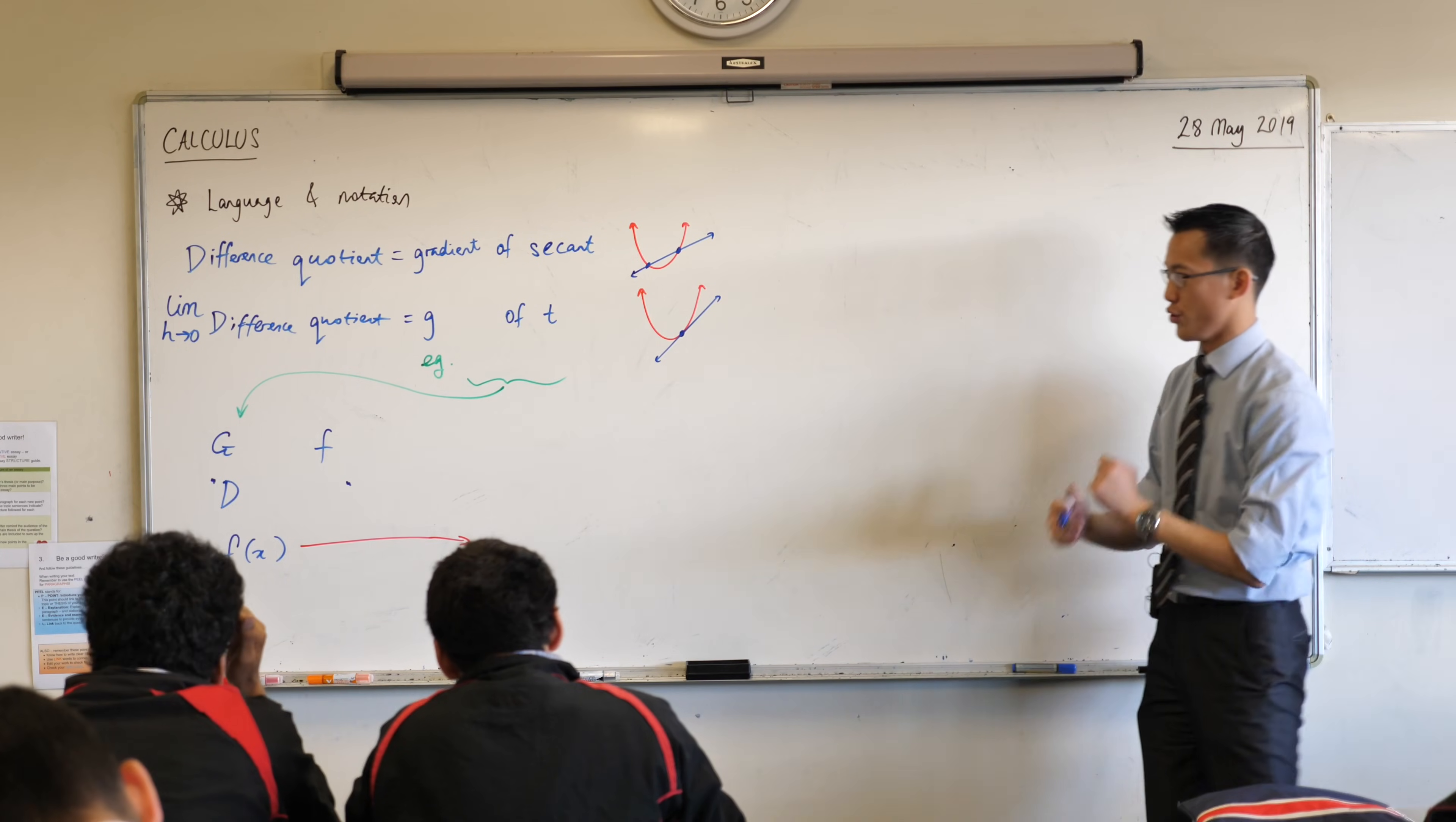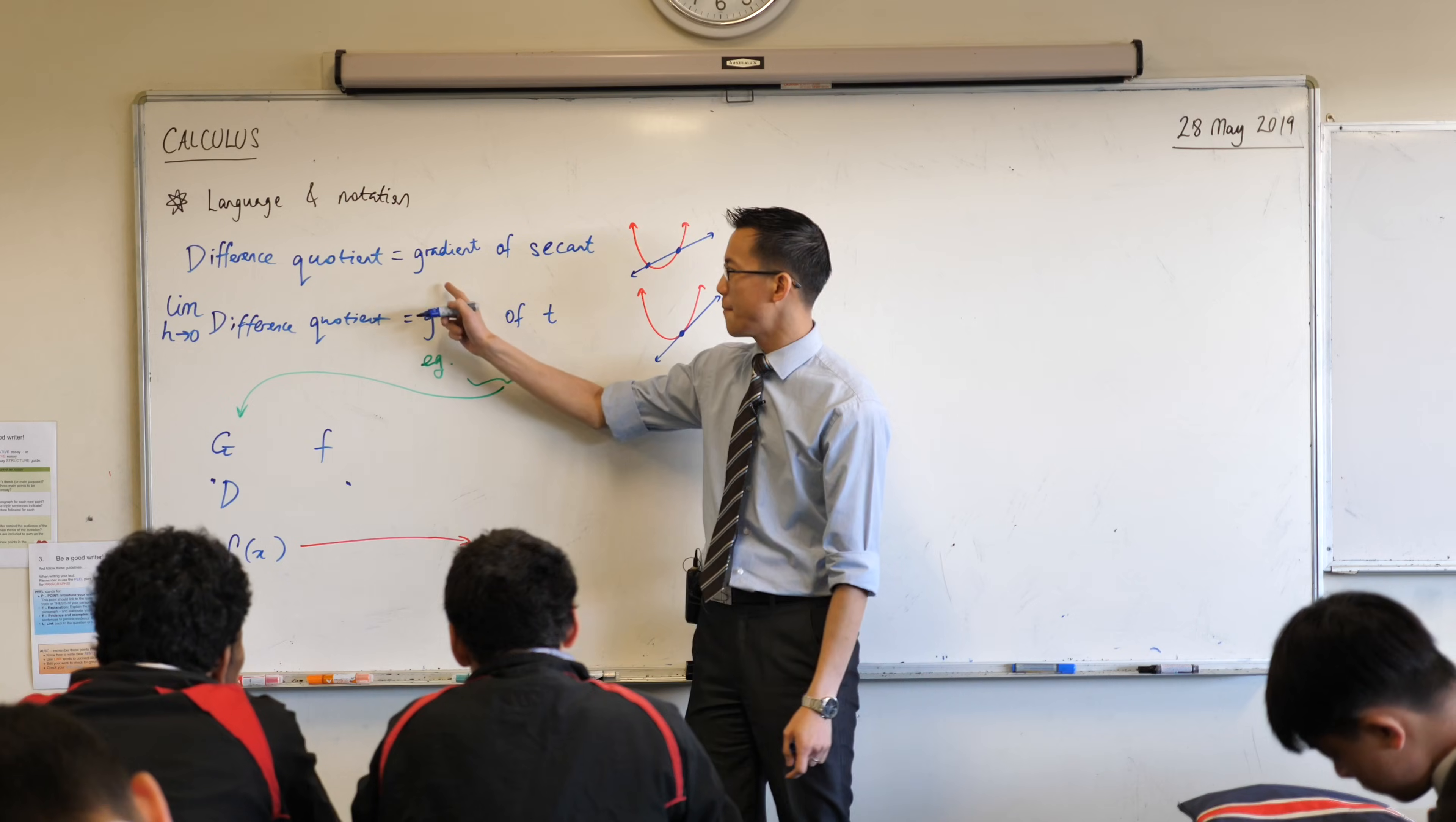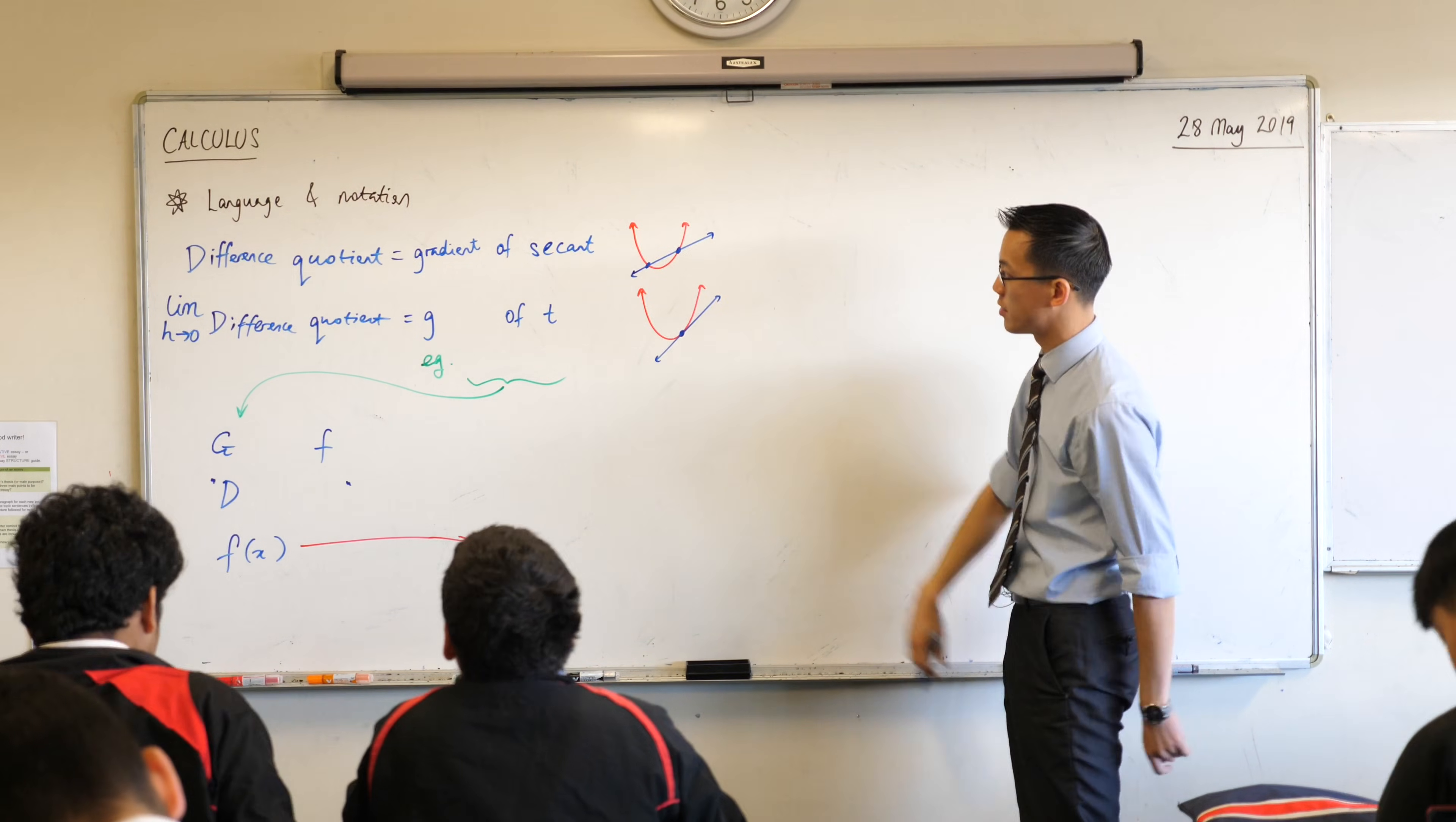This idea of a limit takes this h sort of out of the equation, right? So, what happens is you no longer get the gradient of a secant, as you can see here, and please draw this diagram next to your words as well.